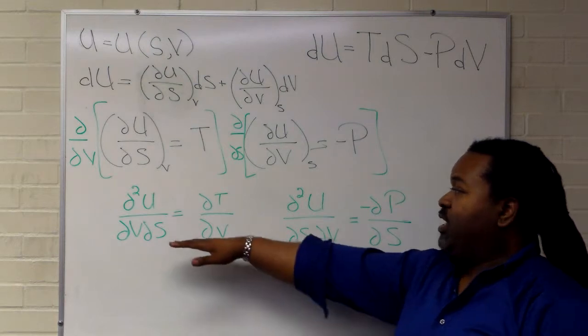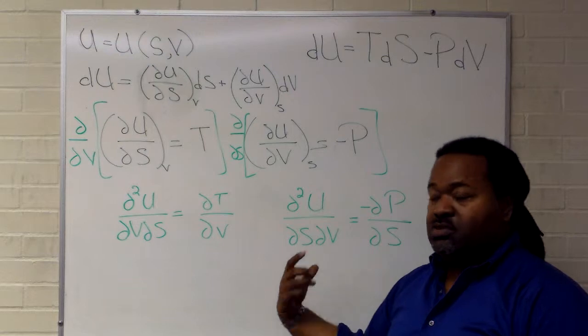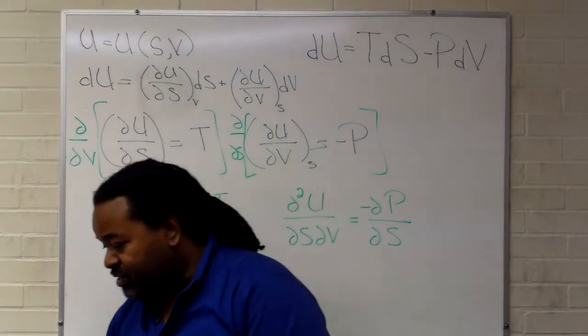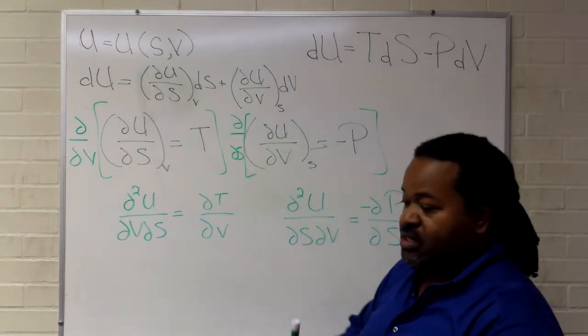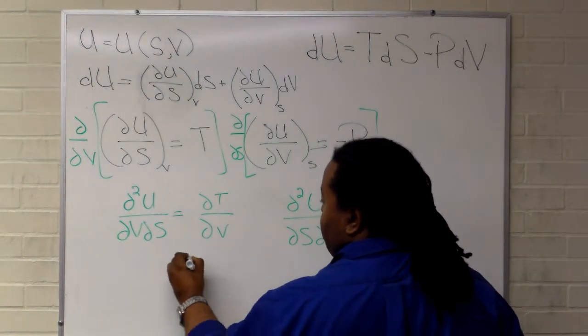So now what we have are two second mixed partials. We set these equal to each other, and this allows us to have a Maxwell relation.